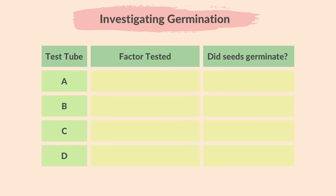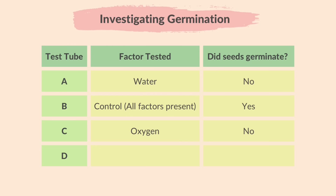These are the results of the experiment. In test tube A, there was no moisture, so the seeds did not germinate. In test tube B, the seeds germinated since they had all factors necessary for germination — this is the control. In test tube C, the seeds did not get oxygen, so they did not germinate. In test tube D, the seeds did not get warmth, so they did not germinate.